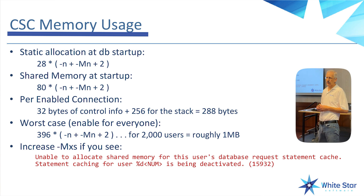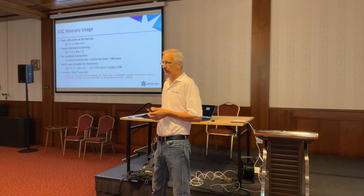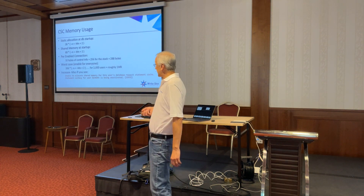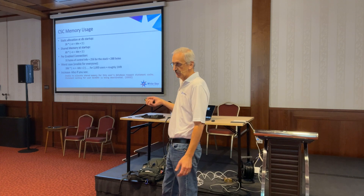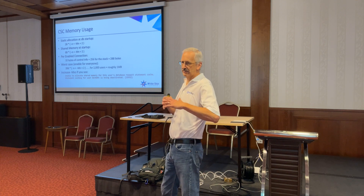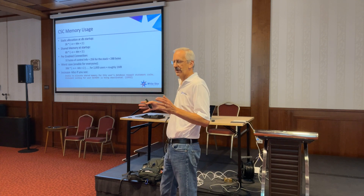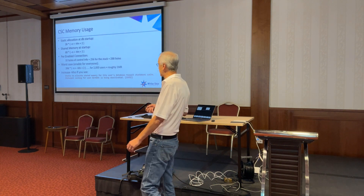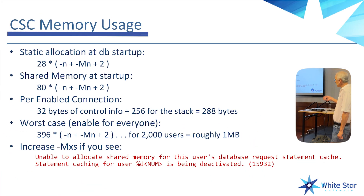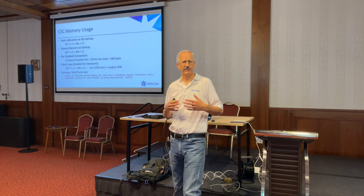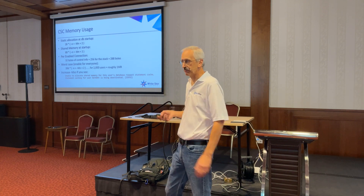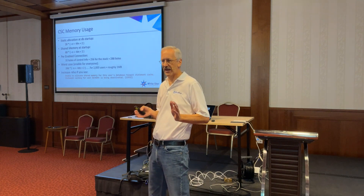First of all, there's memory. In order to enable the client statement cache, you need to consume some memory because the cache itself has to be stored somewhere. At dbStartup, you'll have 28 bytes allocated per user plus the number of servers plus two. There's some shared memory allocated at startup to make the client statement cache available. When you enable a connection, you use 32 additional bytes plus 256 bytes for the stack — another 288 bytes. With roughly 2,000 connections, you're using memory on the order of a megabyte. This is not a big footprint feature.